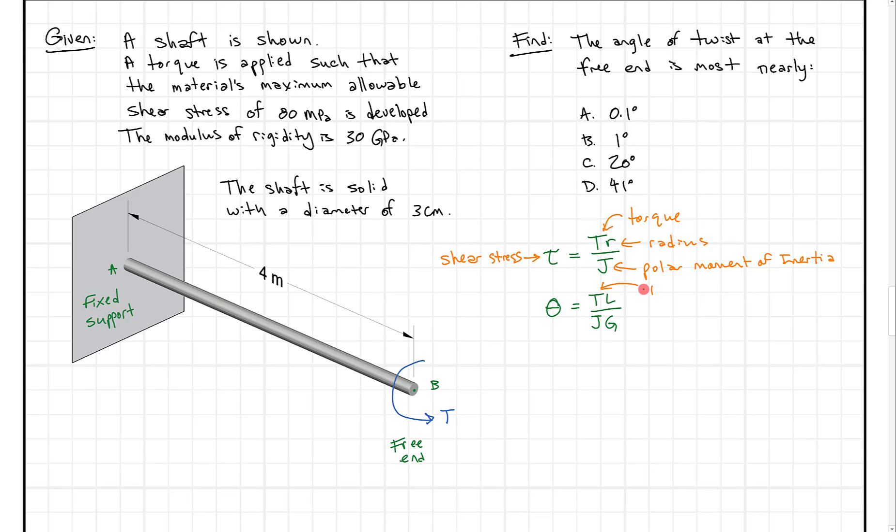And when we put those in we're solving for the shear stress. Similarly down here, we still have torque. Now L stands for length, J is still the polar moment of inertia, and G is the shear modulus or modulus of rigidity. When we plug those in we get the angle of twist in radians.